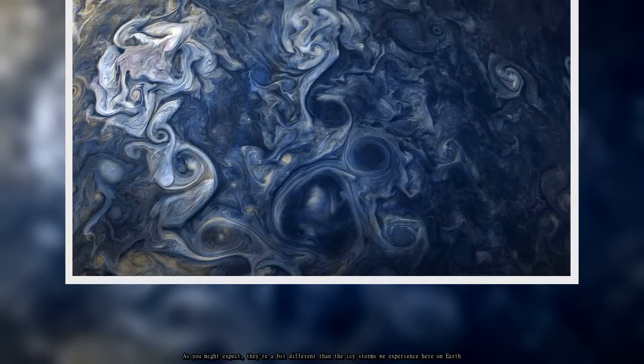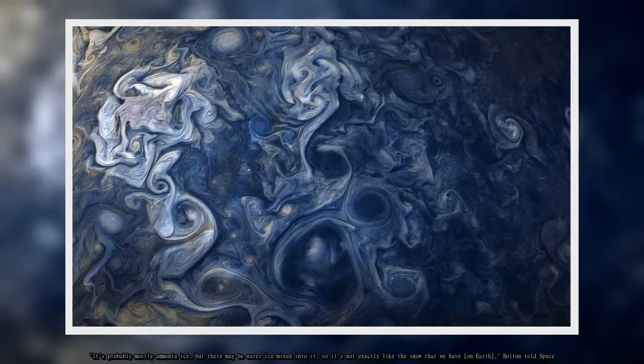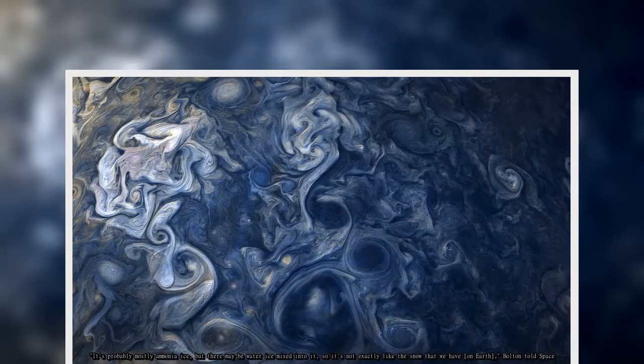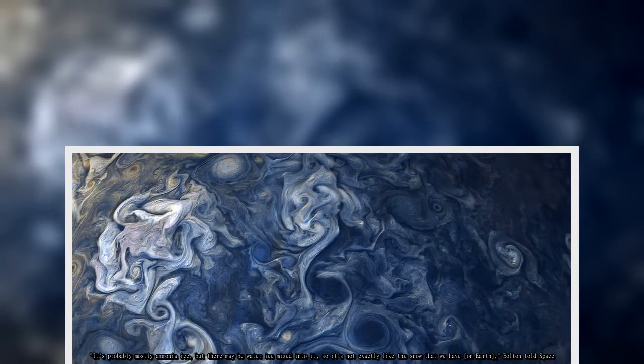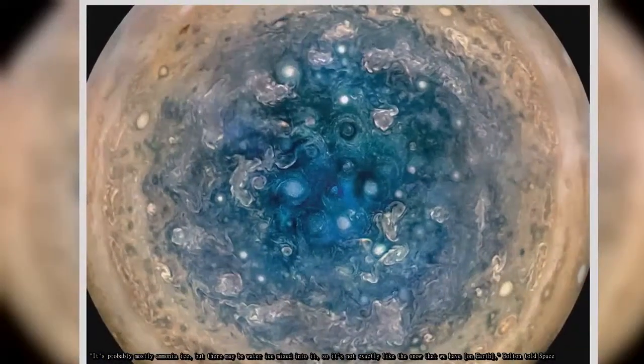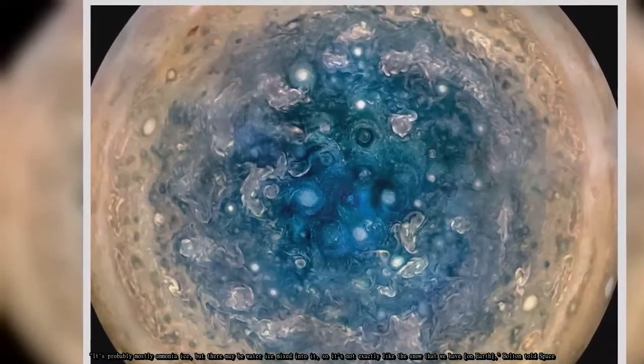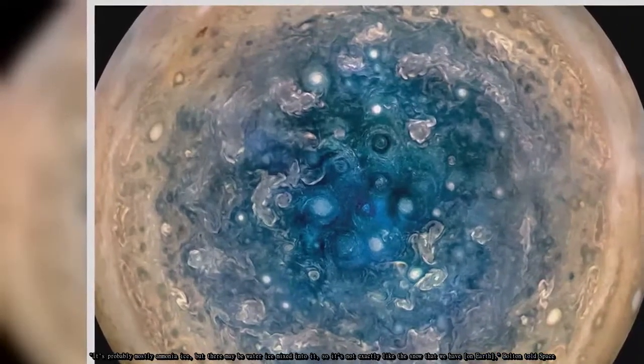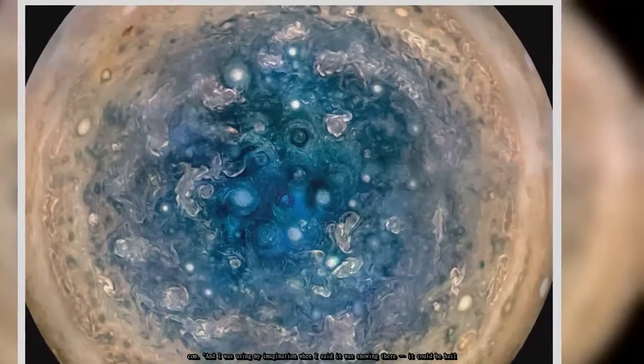It's probably mostly ammonia ice, but there may be water ice mixed into it, so it's not exactly like the snow that we have on Earth, Bolton told Space.com. And I was using my imagination when I said it was snowing there, it could be hail.